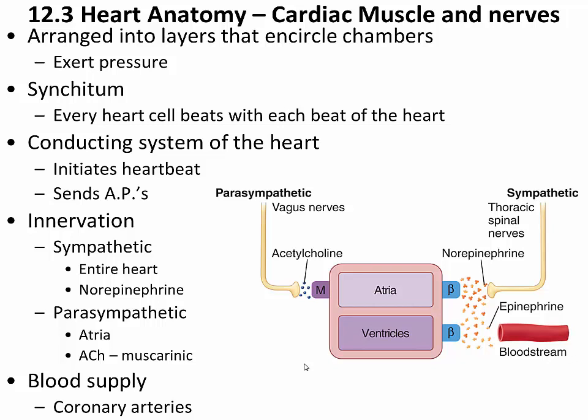The heart does not extract oxygen directly from the blood flowing through it. Instead, when blood exits the left ventricle into the aorta, coronary arteries immediately branch off — the very first arteries to branch from the oxygenated blood leaving the heart. These coronary arteries spread out over the entire heart, providing a rich supply of oxygen. The heart relies entirely on the coronary arteries for its blood and oxygen supply.